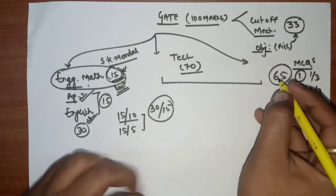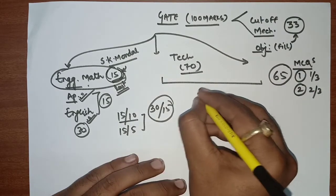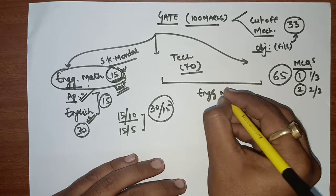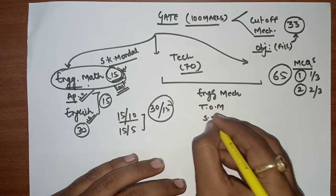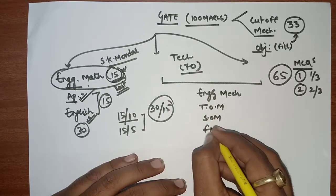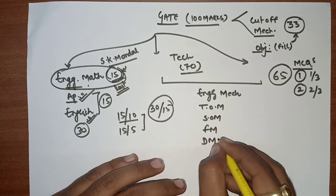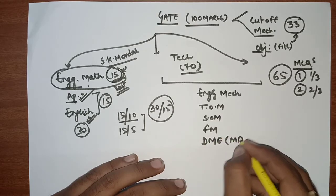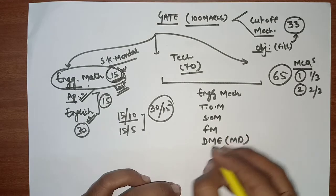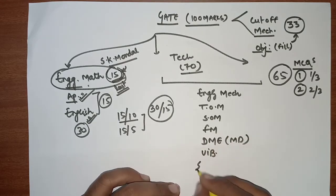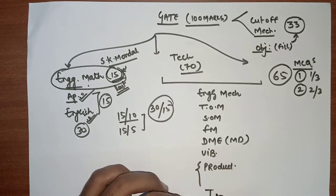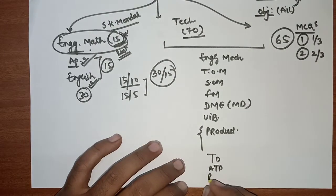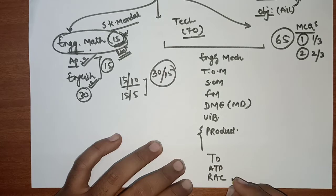Now let's talk about the 70 marks technical part. Starting from first year subjects: Engineering Mechanics, Theory of Machines, Strength of Material, Fluid Mechanics, Design of Machine Elements (Machine Design), Vibration, Production, Thermodynamics, Applied Thermodynamics, Refrigeration and Air Conditioning (RAC), and IC Engines.